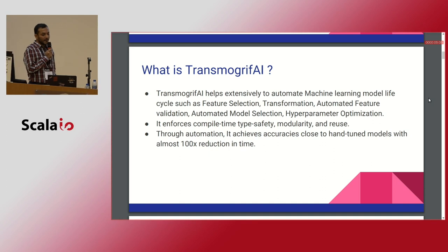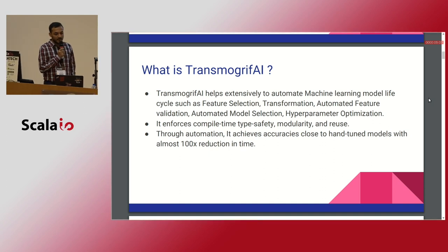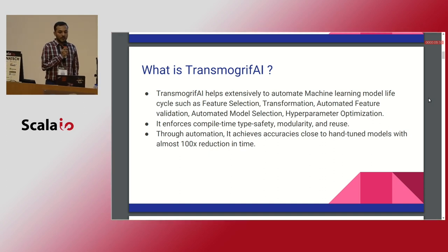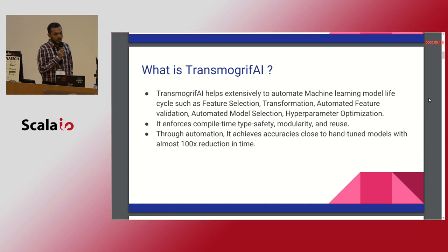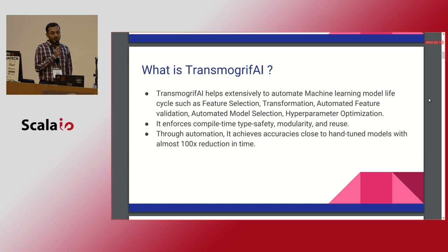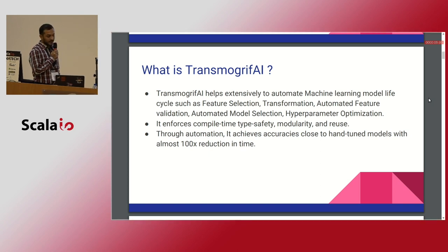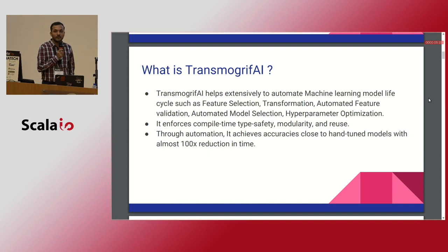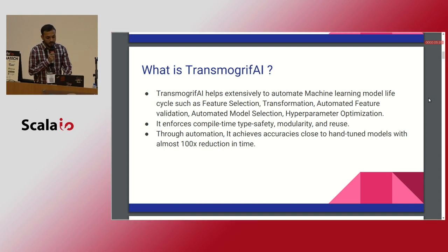It enforces compile-time type safety and you can create different reusable components on top of that. Automation achieves accuracy close to hand-tuned models and can almost reduce your software engineering team's workload 100 times.